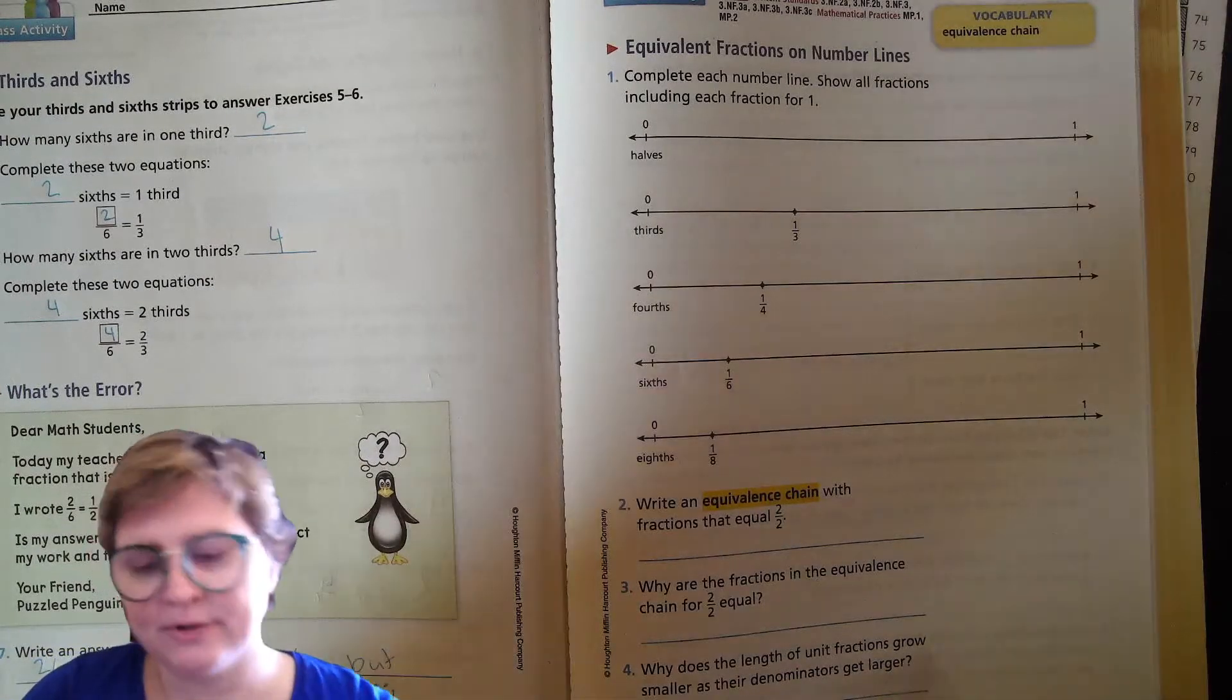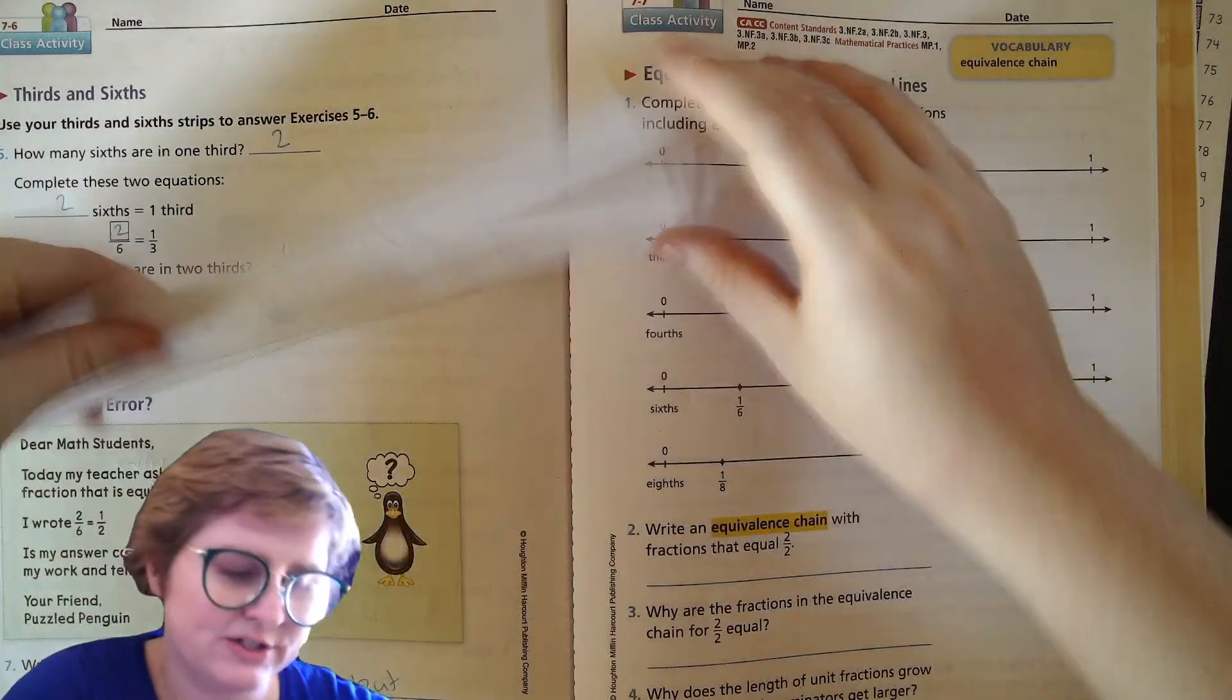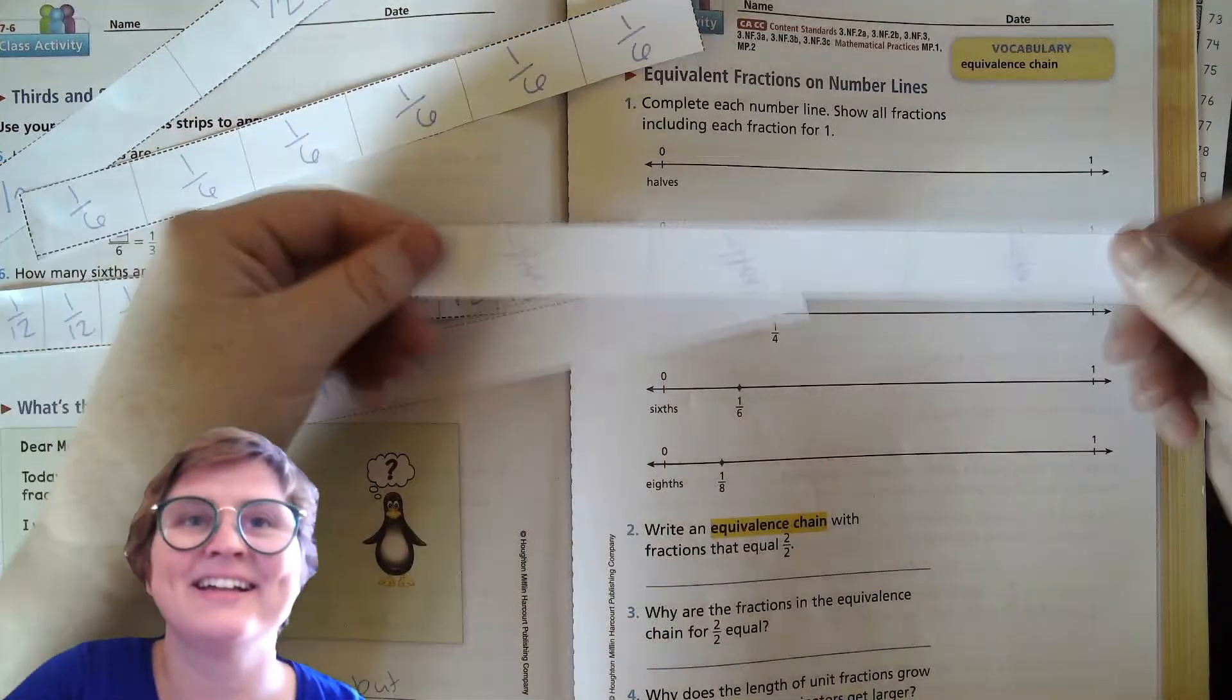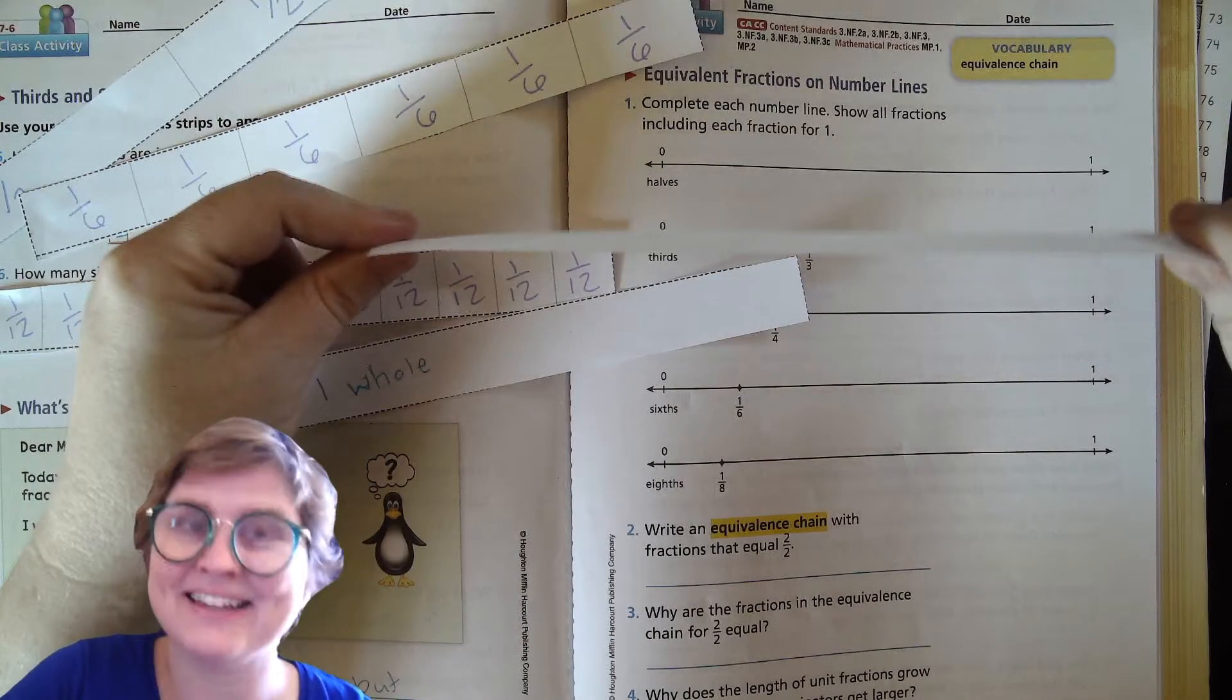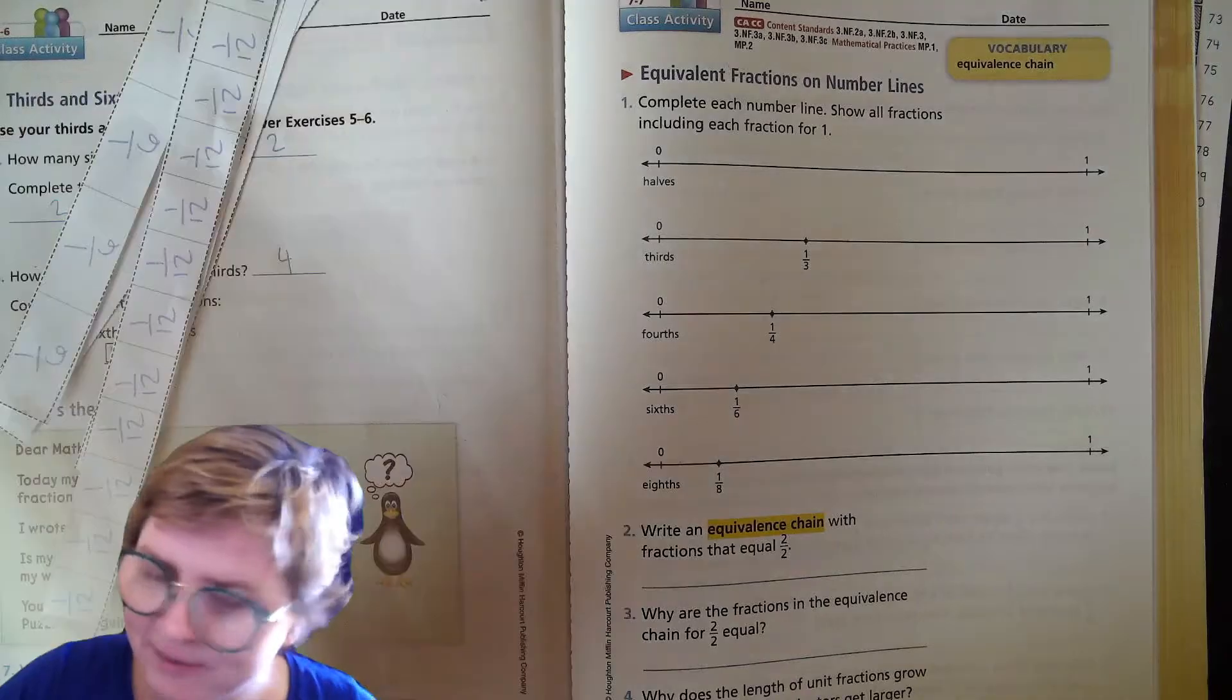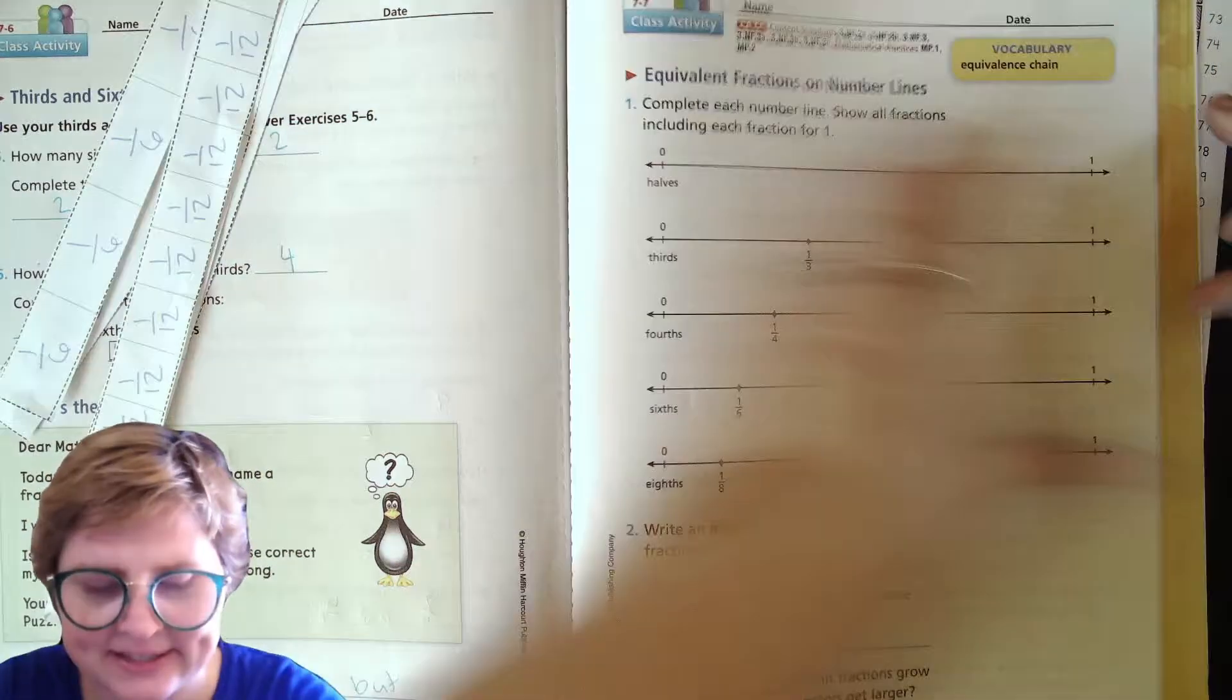Now if you think about it, when you have your fraction strips, if you were to look at it this way instead of that way, it kind of looks like a line, right? So keep that in mind - it's the same concept, just flattened. So we're going to break each of these number lines into where they belong between zero and one.